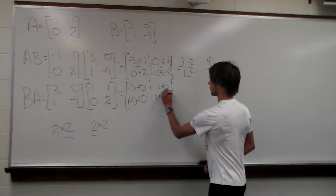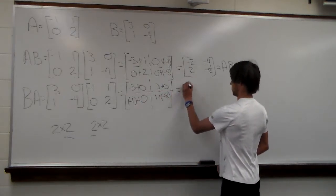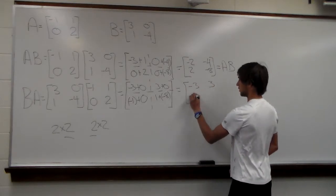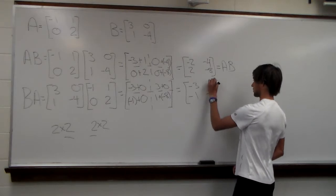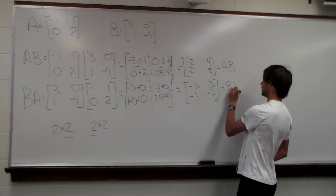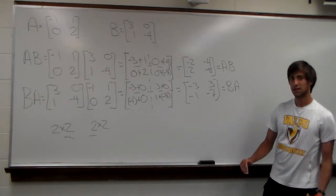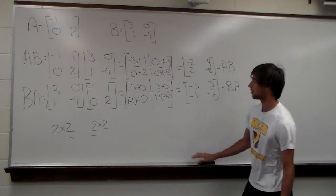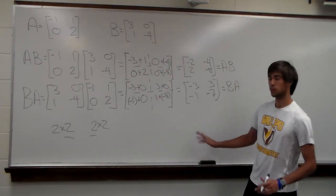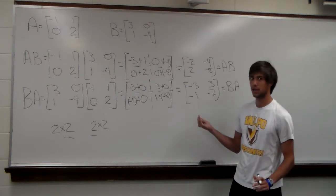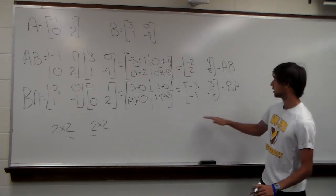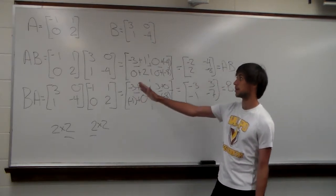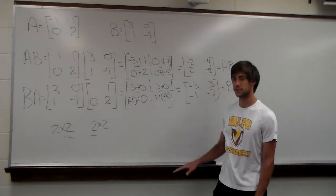Adding those together gives us negative 3, 3, negative 1, and negative 7 — this is B times A. We can see that the order we multiply matrices does matter. This is a departure from regular numbers where order doesn't matter. Since A times B is different from B times A, we have to be very careful to have the correct matrix first and the correct matrix second when multiplying.